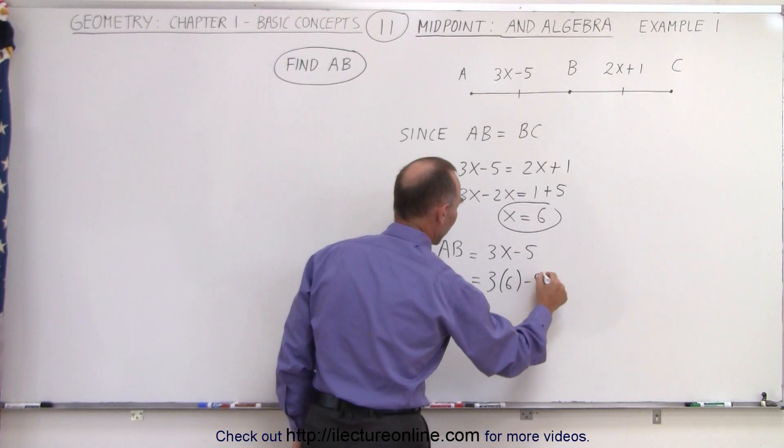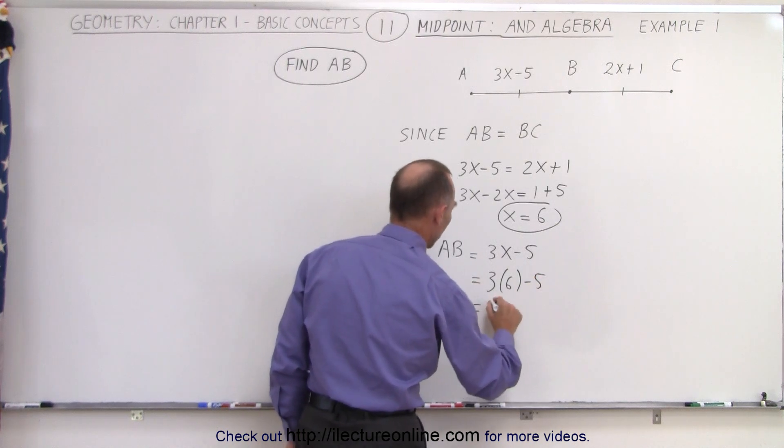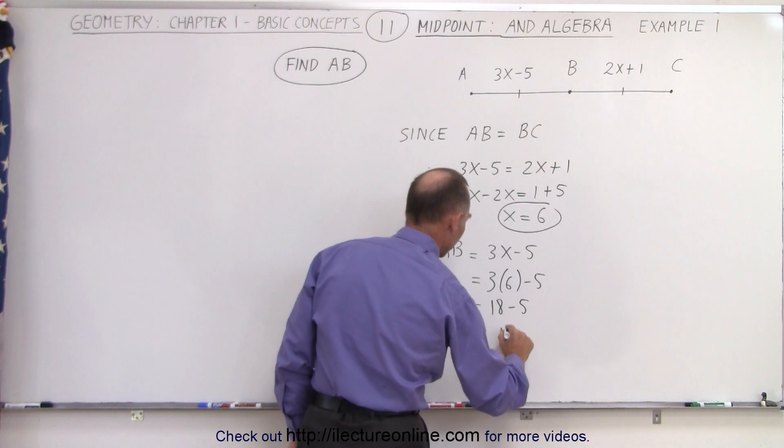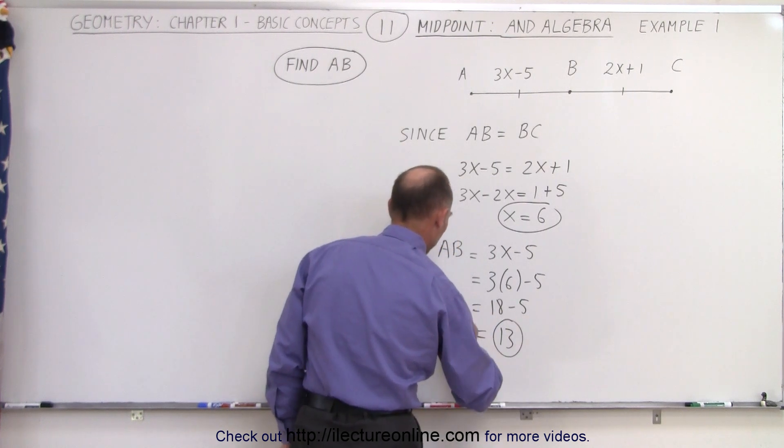minus 5 is the length of AB, or 18 minus 5, which means the length of AB is equal to 13.